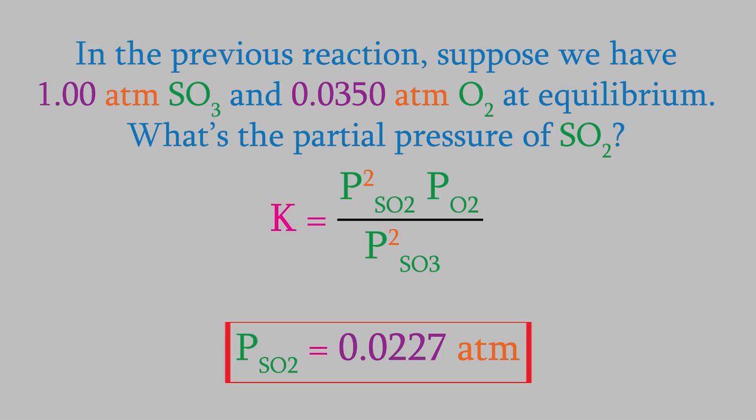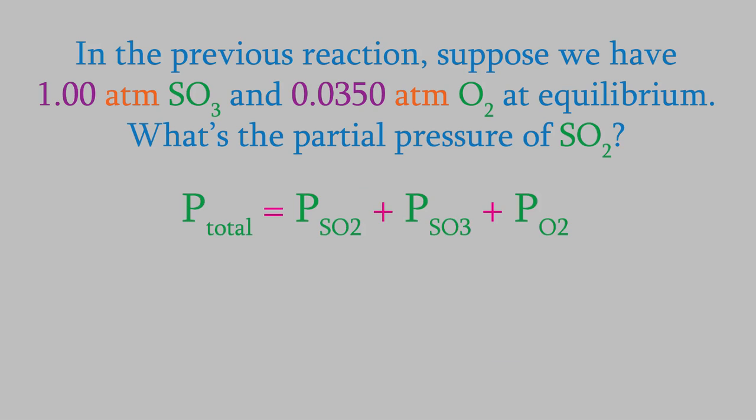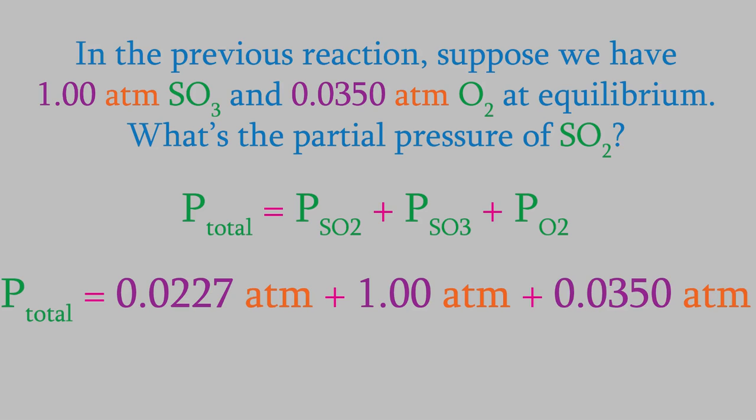Notice that this is only the pressure of the sulfur dioxide. The total pressure in the container would be the sum of all the different partial pressures. So in this case, that's 0.0227 atm for the SO2, plus 1.00 for the SO3, and 0.0350 for the oxygen, which gives us a total pressure of 1.06 atm.